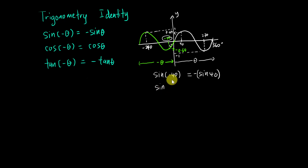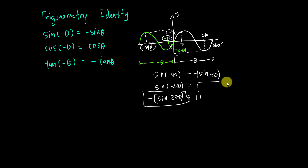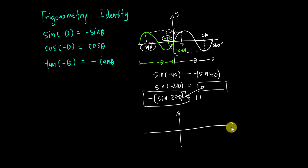Same idea: sine negative 270 gives positive one. But sine 270 gives negative one. To make both equal, I add a negative sign, making it positive one, and then both sides are positive one — so I can shift that relationship over.